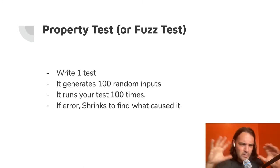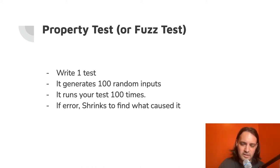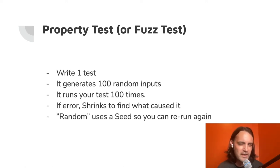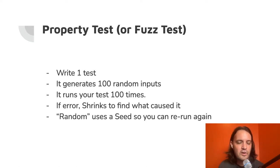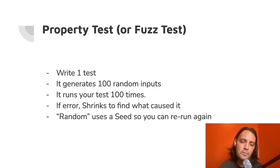If it errors, it'll do this thing called shrinking, where it finds out what caused it — specifically what's the minimum input that caused the failure. Because some of these inputs can be quite large when you start creating custom objects and classes. Shrinks are a way to say: you had 100 things, here is the simplest thing that made it fail. I use the word random loosely — although it is random, it uses a seed in the beginning so you can rerun again. The seed allows you to reproduce that list, which is super helpful.